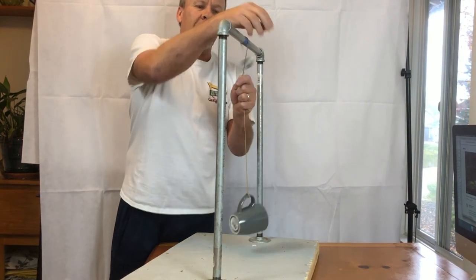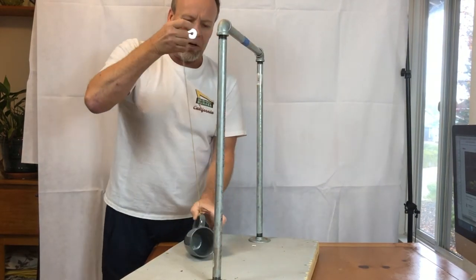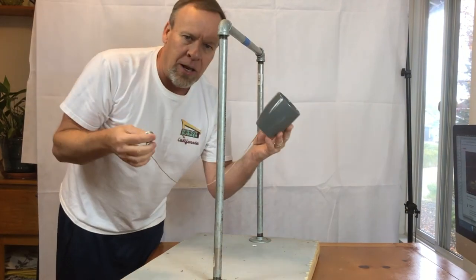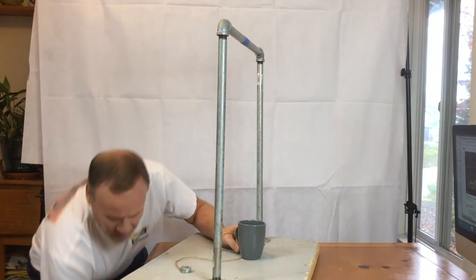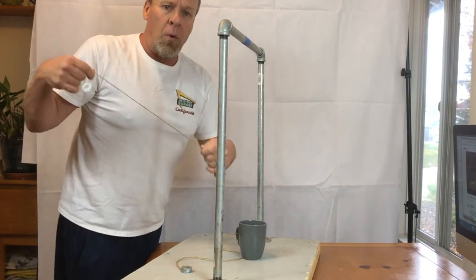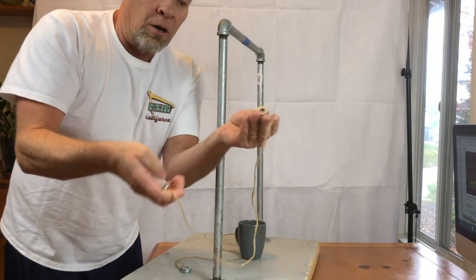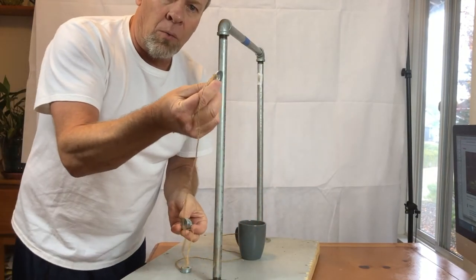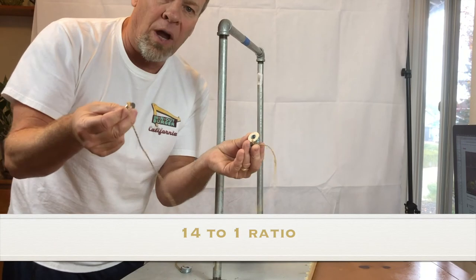So one of the secrets that have been found out here is whatever your end is, if it's going to be, if it's the washers here, a number of washers into the one washer, it's a 14 to one ratio.